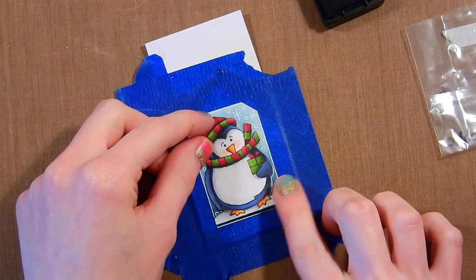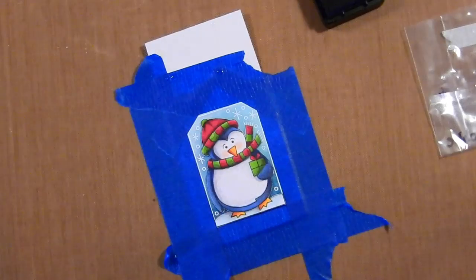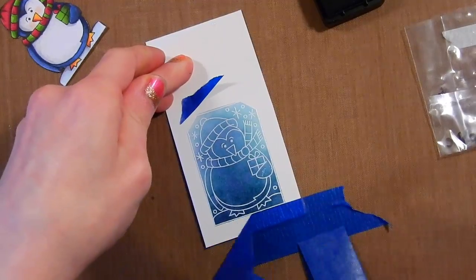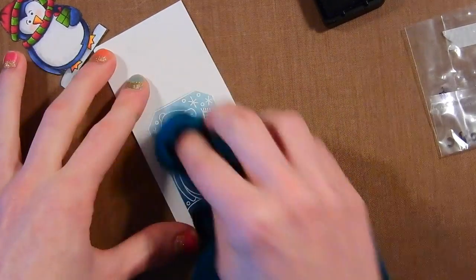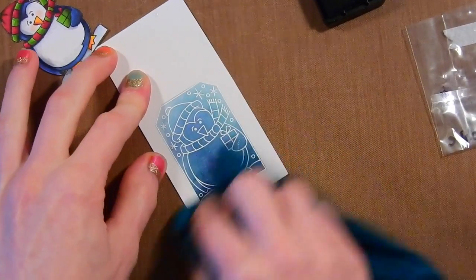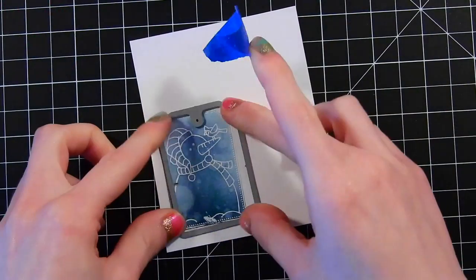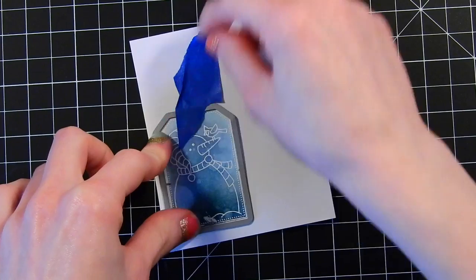For my ink blending I'm using Tumbled Glass as the first color I applied down, Evergreen Bough was the second color, and now I'm adding Chipped Sapphire. I'm just making sure I got the shading the way I wanted it. You can see I'm just lining up this penguin to make sure I like how it's looking. I took off the tape - I used tape to mask it because it's a really easy way to mask off edges of your coloring. That was just some plain painters tape, you could use frog tape or masking tape or whatever other kind of tape that's got a light tack to it.